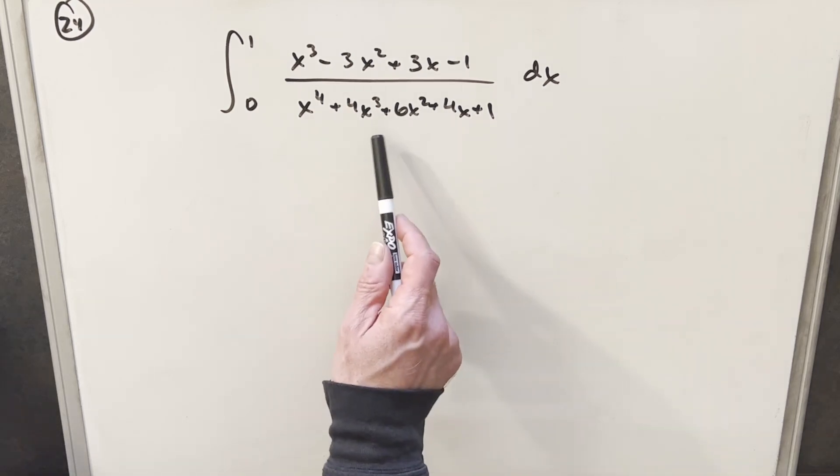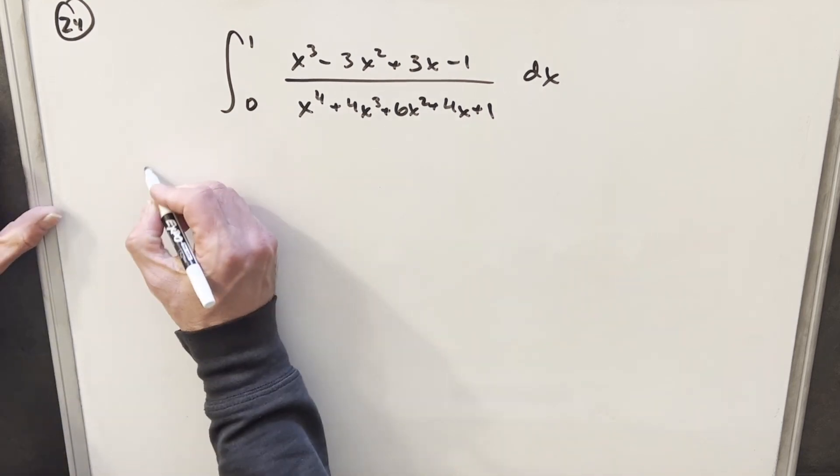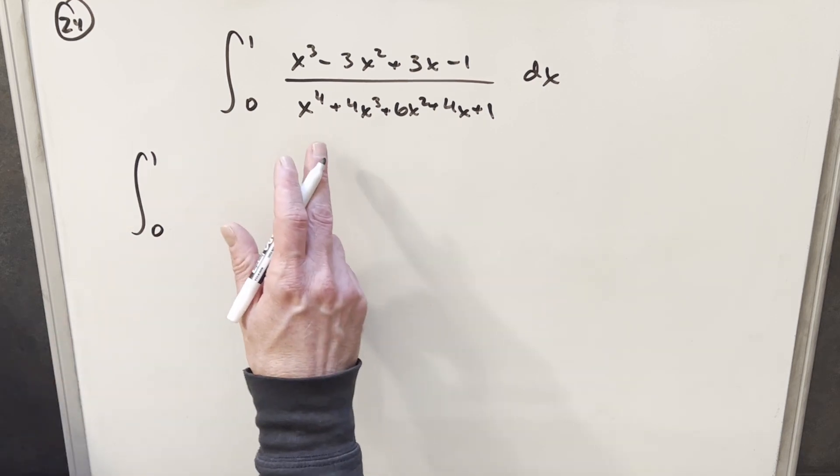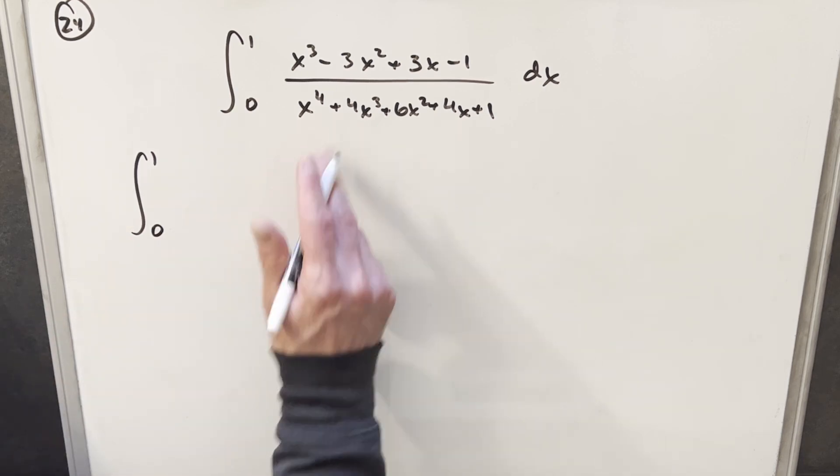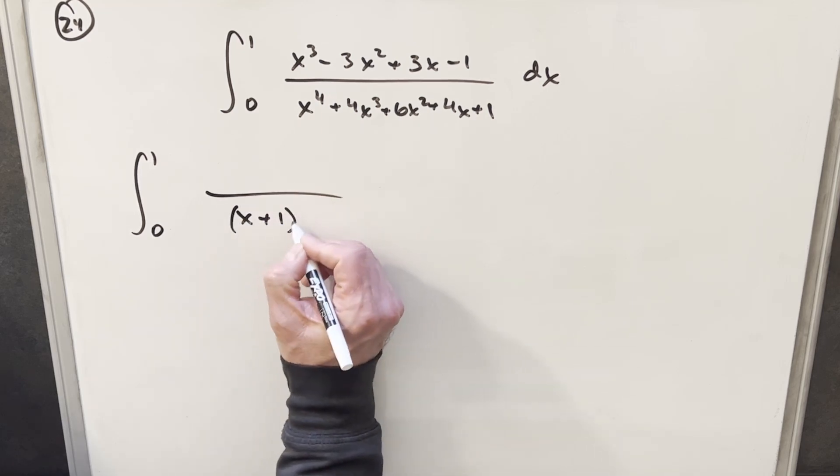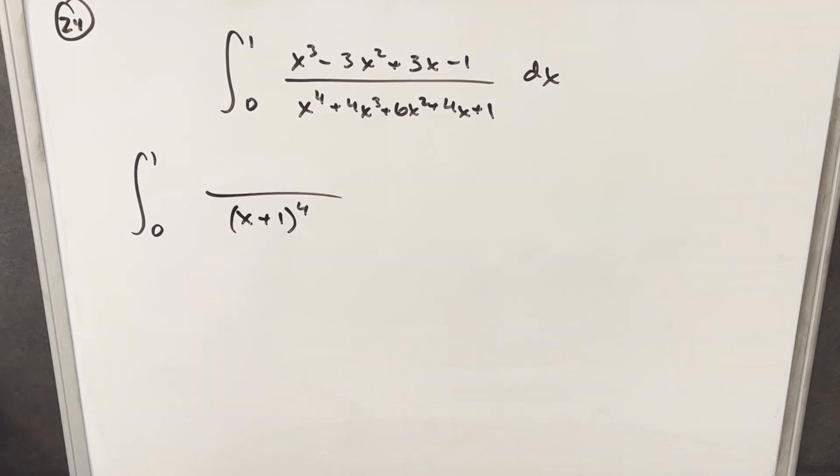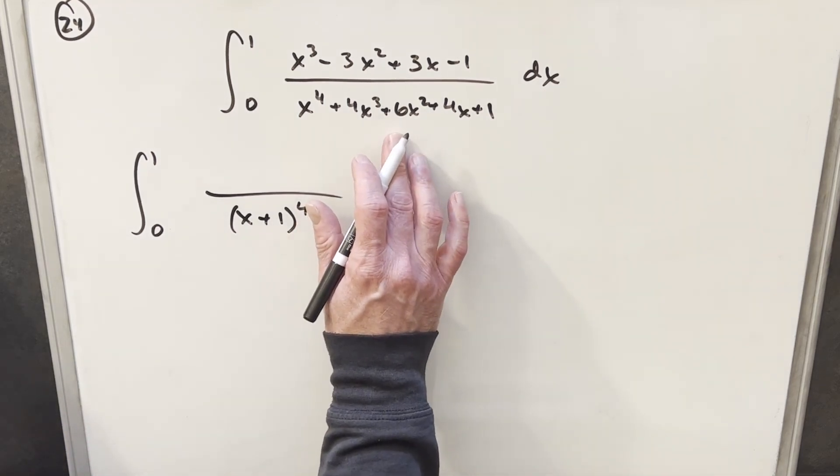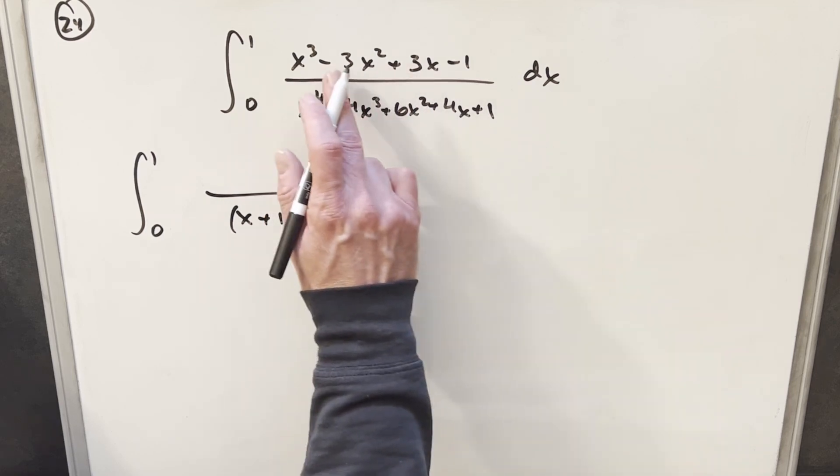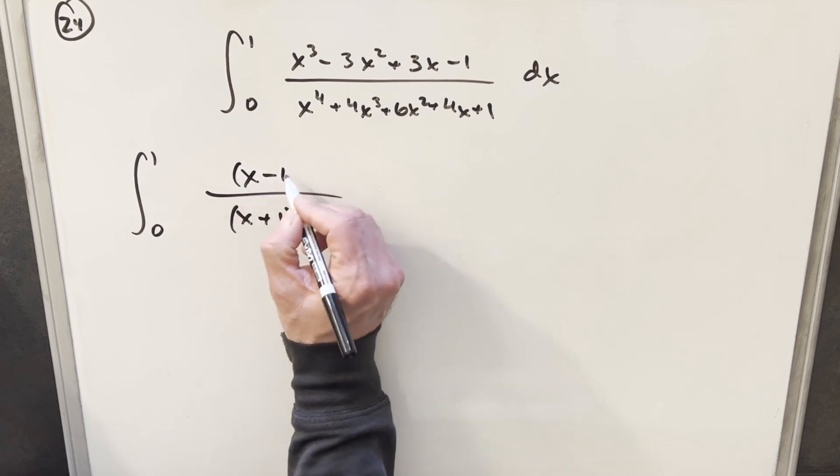To start with, each of these polynomials in the numerator and denominator should be really familiar. You'll notice in both cases the coefficients match Pascal's triangle. This expression in the denominator is exactly x plus 1 to the 4th, noticing that pattern of the coefficients there. Then very similar to what we have in the denominator, x plus 1 cubed would give us this but with all plus signs. This expression here is actually just x minus 1 cubed.